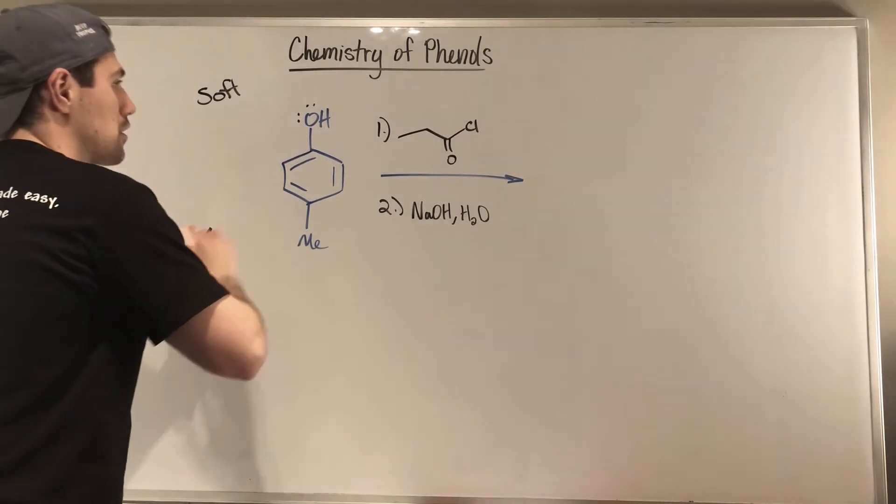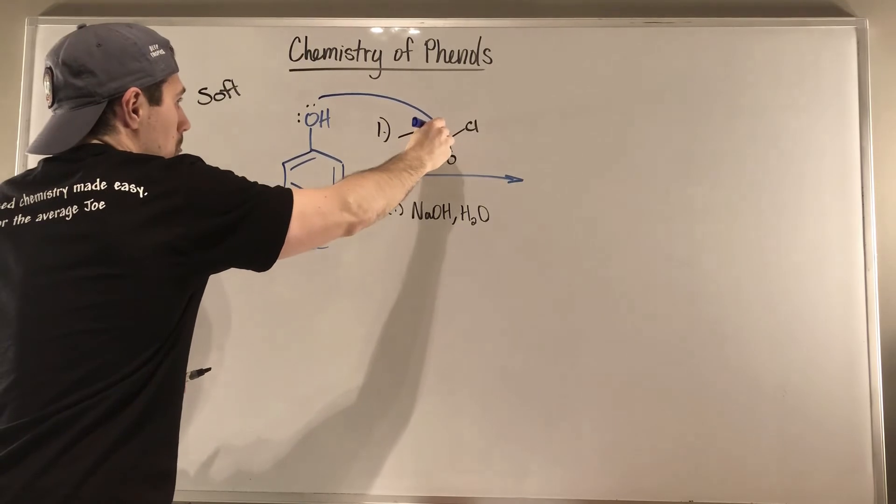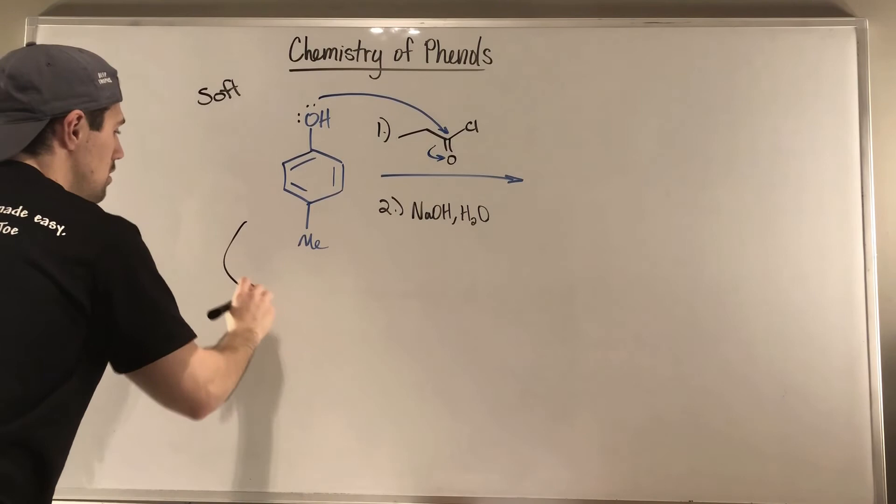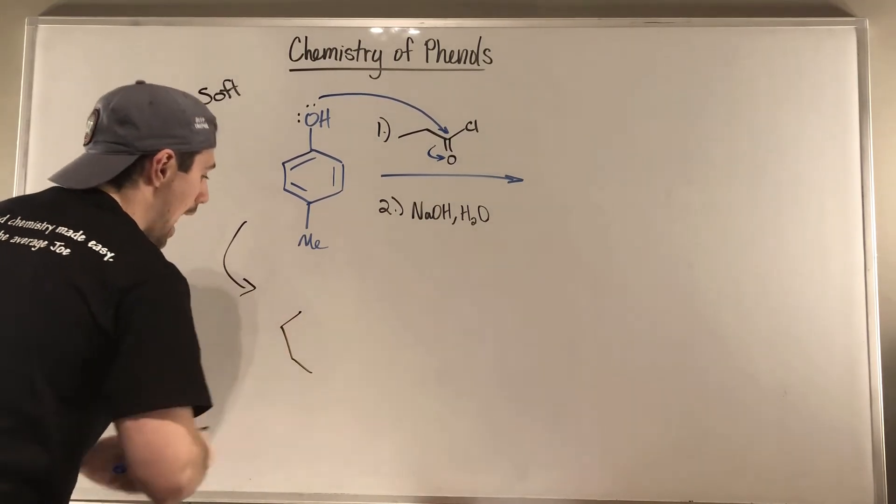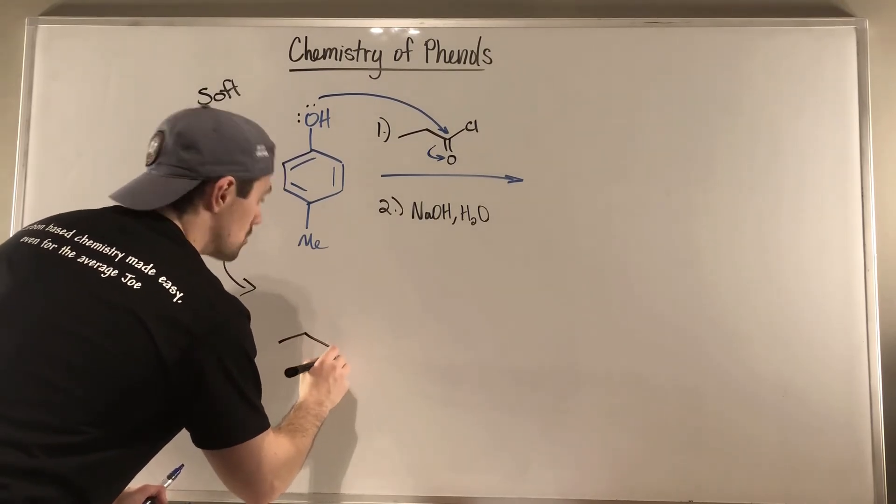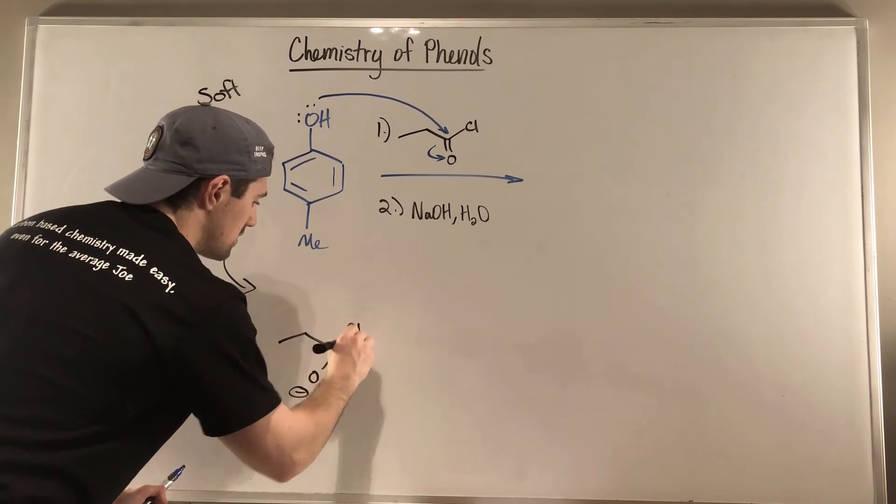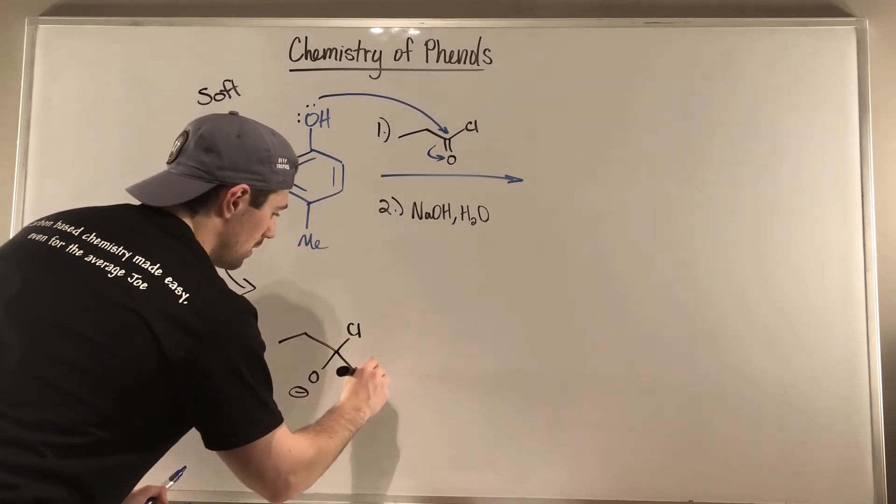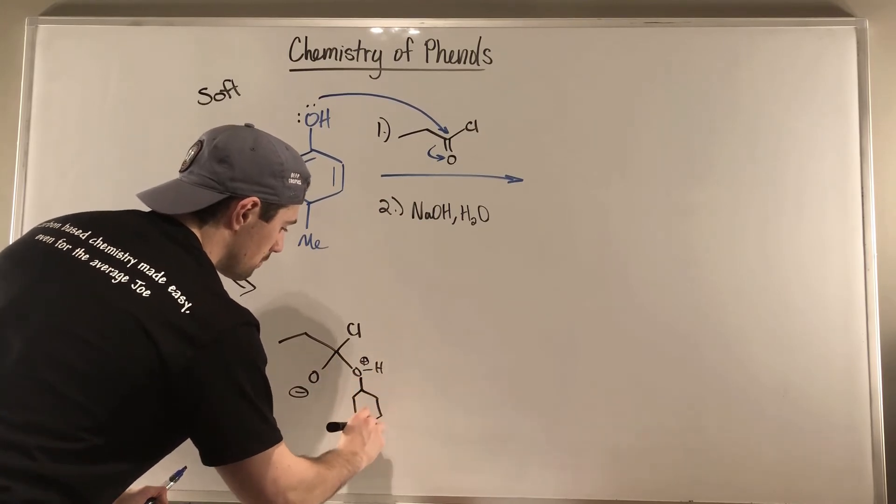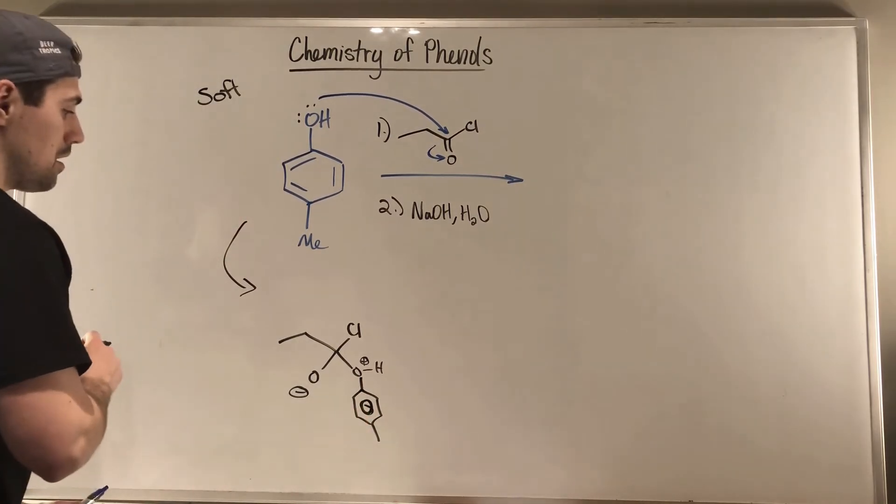So what's definitely going to happen first is the oxygen here will attack our carbonyl carbon, and these electrons are going to kick up. So I'm going to draw this out, even though I know you're all pros at addition elimination mechanisms at this point in time. So what I'll do is I'll kick this over here, O minus, I'll get my Cl over here, and this is going to be a big old mess, but I'm going to be lazy, I'm going to do the circle for the aromatic bonds.